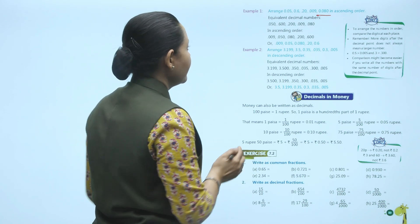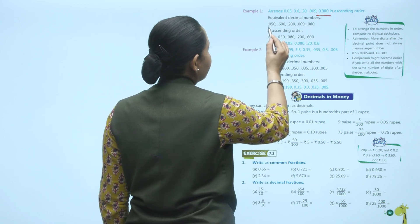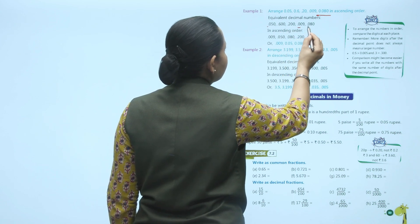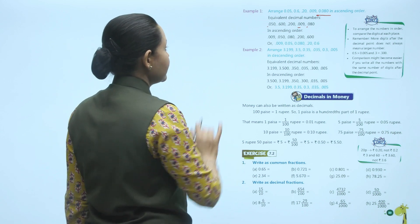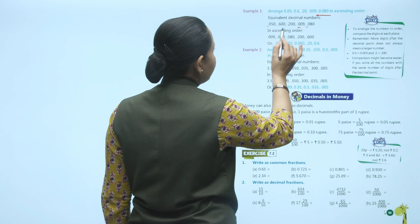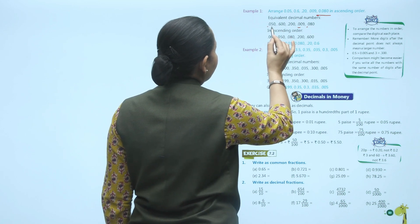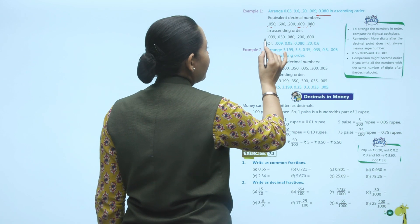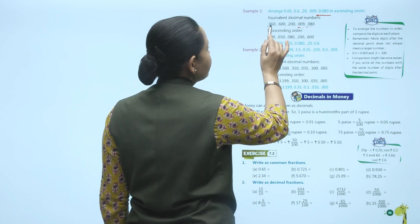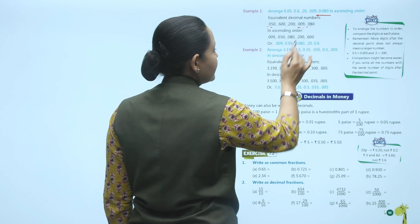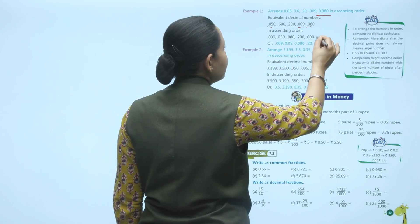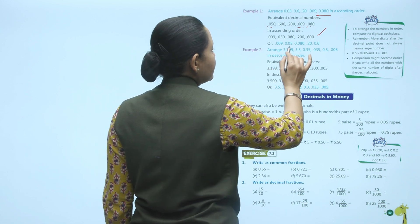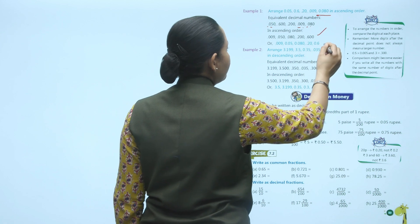Starting from the left, compare the tenths place: 0, 6, 2, 0, 0. The smallest tenths are 0, so compare hundredths among those: 0.050 has 5, 0.009 has 0, 0.080 has 8. So 0.009 is smallest. Then 0.050, then 0.080, then 0.200, then 0.600. Ascending order: 0.009, 0.05, 0.080, 0.20, 0.6.